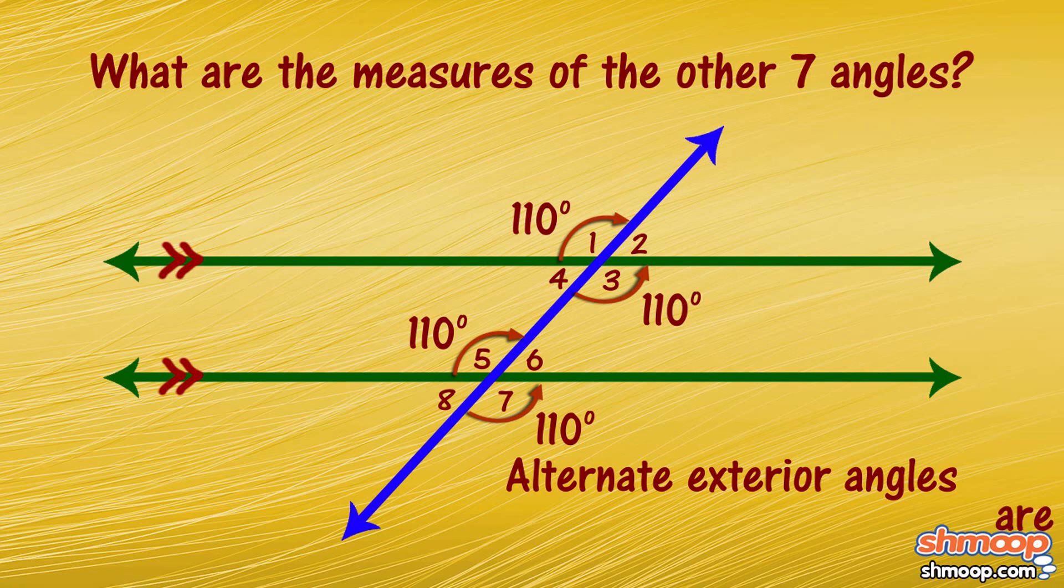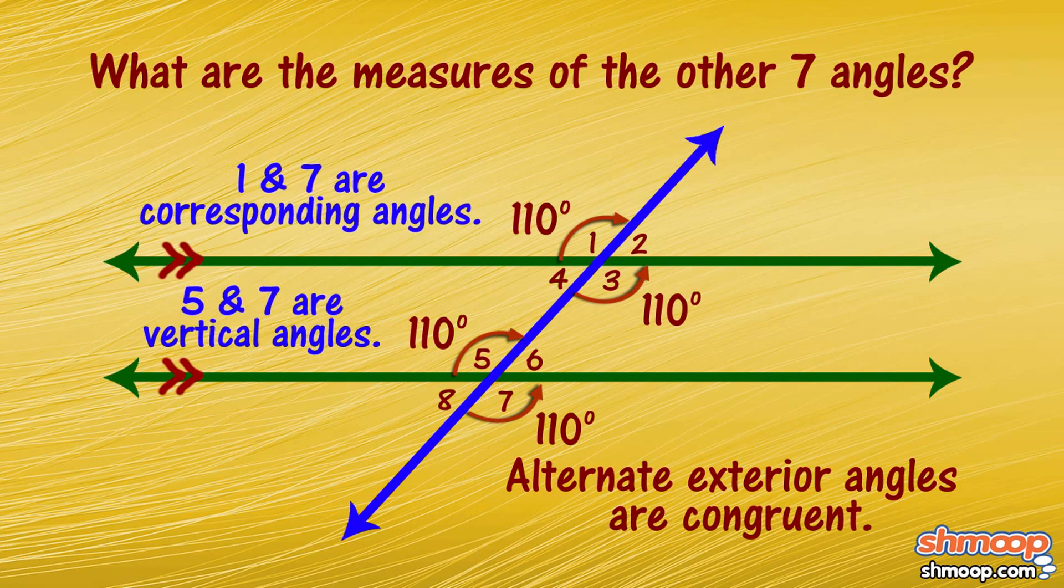Alternate exterior angles are also congruent, and we can check that using vertical angles or corresponding angles. Yep, looks like 110 degrees to us.